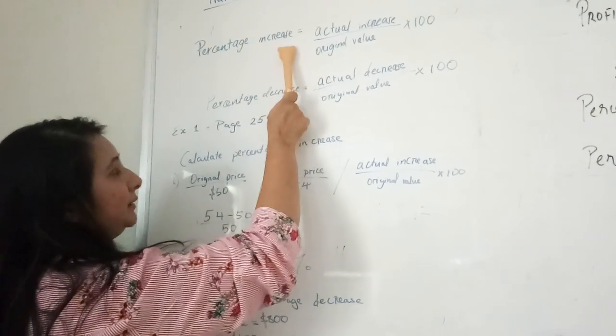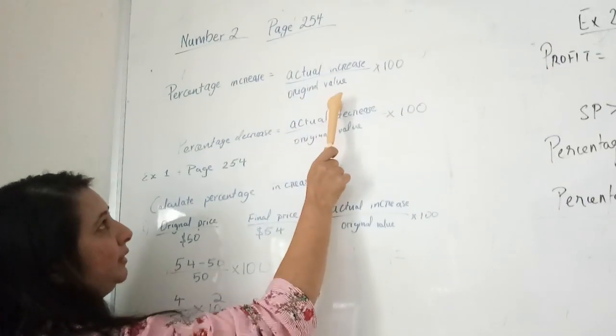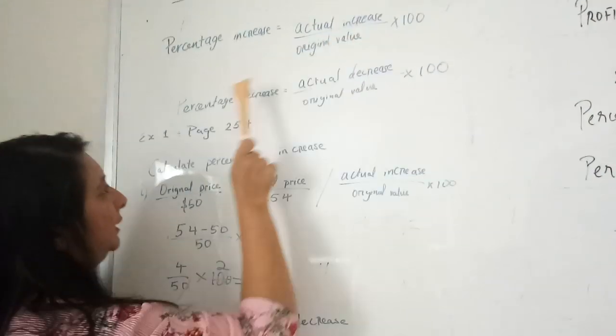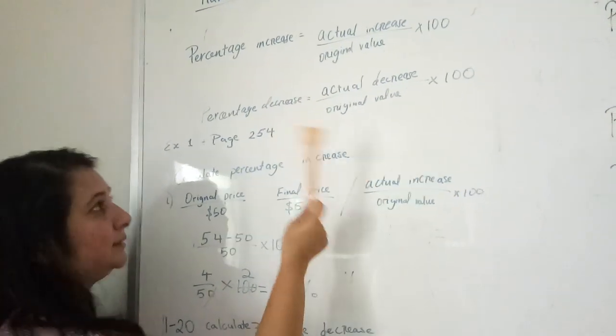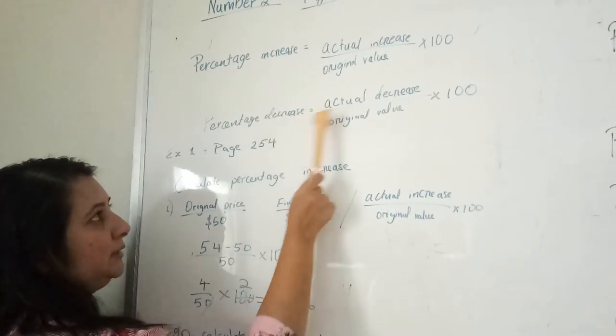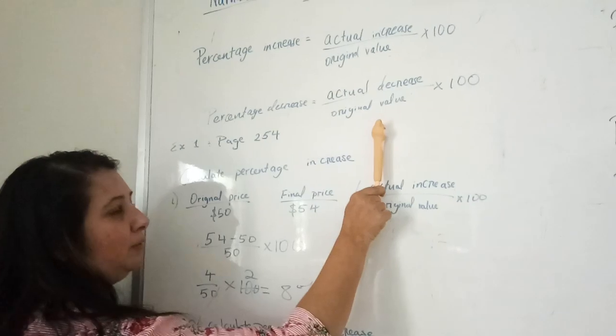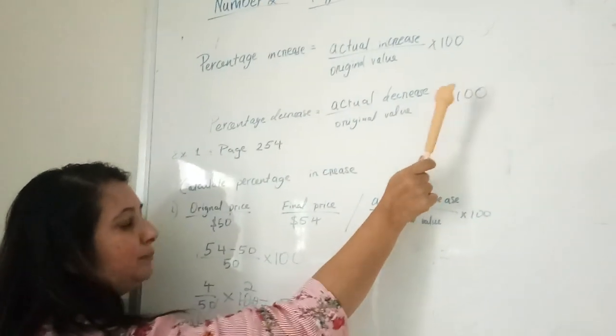If it is an increase, we say the increase divided by original value times 100. If the price has decreased, then percentage decrease equals actual decrease divided by original value times 100.